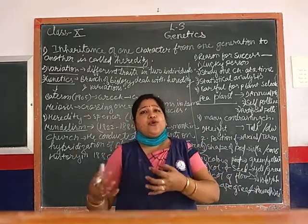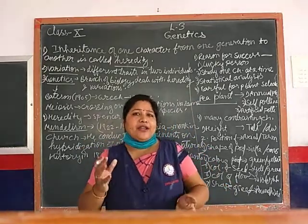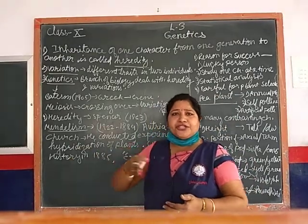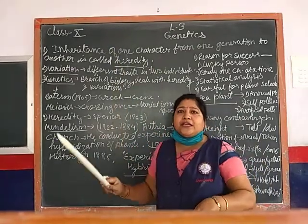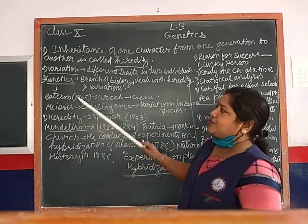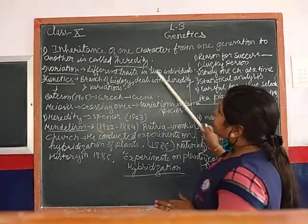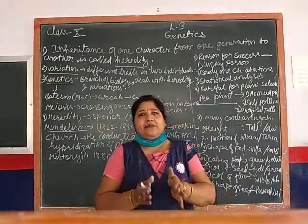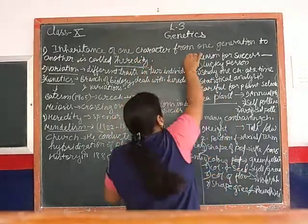Our body has many characters which are hereditary - passed generation to generation. Now, there are similarities and there are many differences. We call the differences variations. What are these? Different traits in two individuals - even in the same family. For example, two sisters: there are many similarities, that's why we recognize them as family - that is heredity.